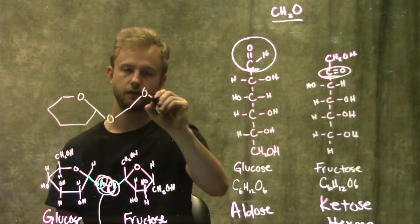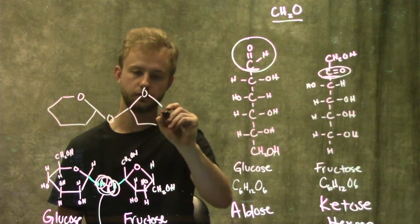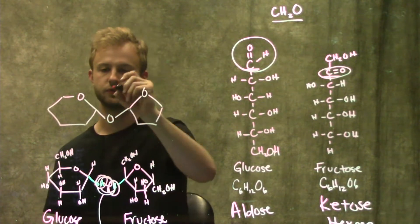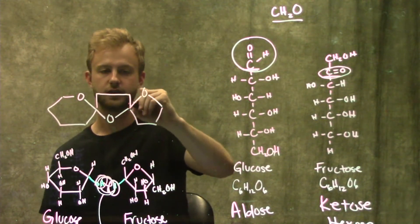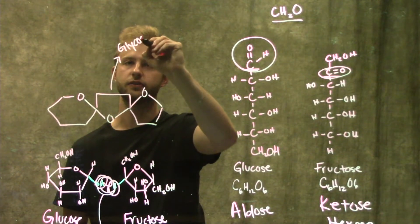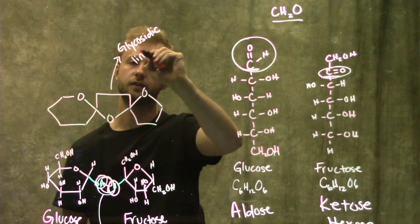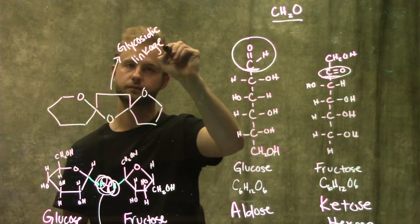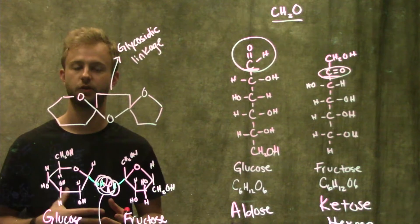I'm not going to draw the other groups on it, but this bond right here is called a glycosidic linkage or a glycosidic bond. There are different kinds of glycosidic bonds.